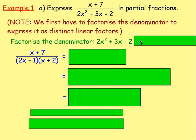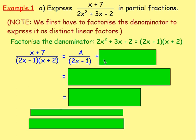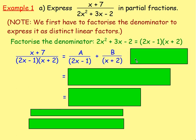Factorising 2x² + 3x − 2 gives (2x − 1)(x + 2). So we can write this as A over (2x − 1) plus B over (x + 2), the way we did in Chapter 1. From there, we need the same denominator as the left-hand side: (2x − 1)(x + 2).